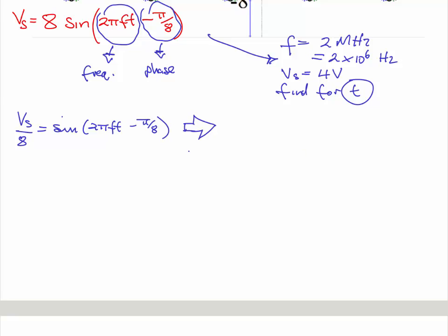Move on a step further. How about taking the sin^(-1) of both sides? In that case, that sin is going to disappear, so we're going to have sin^(-1)(Vs/8) = 2πft - π/8.